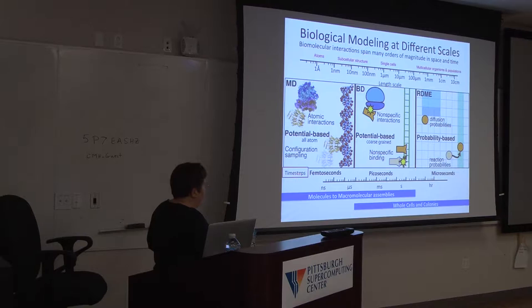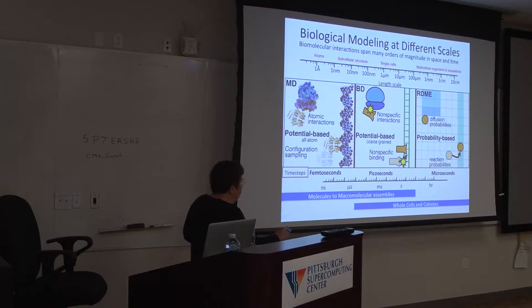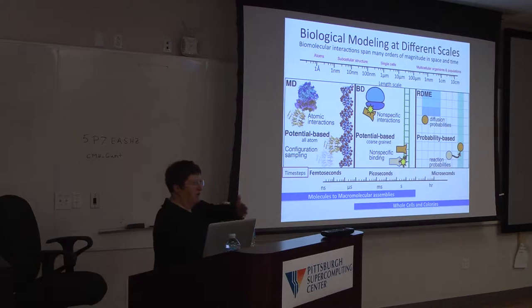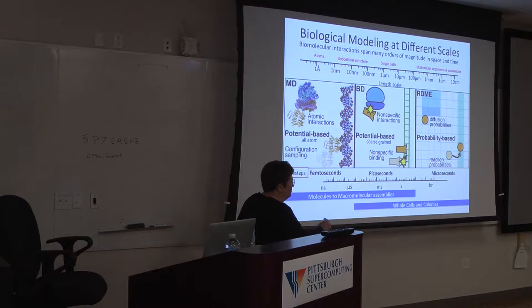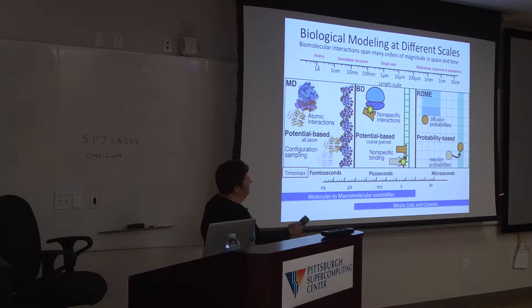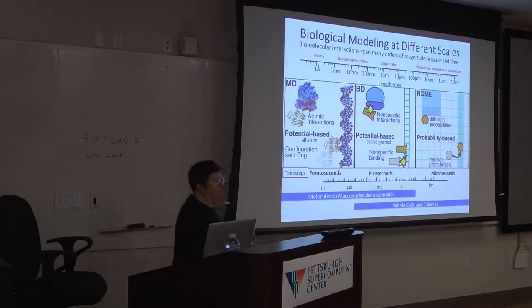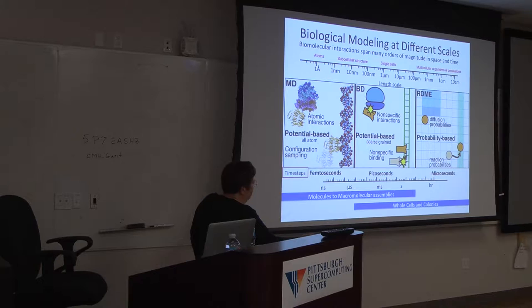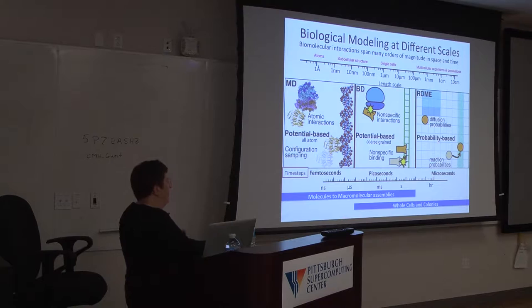If you're doing MD, the time steps are typically femtoseconds. You can get up to nanoseconds, or microseconds for smaller systems. Using Anton here in Pittsburgh, you can reach that regime. If you want to speed things up, you'll need coarse graining or Brownian dynamics, and you lose the molecular detail. Here's the ribosome — large subunit, small subunit — and over a coarse-grained model they just become two blocks. Going to this regime of microsecond time steps requires extreme coarse graining.